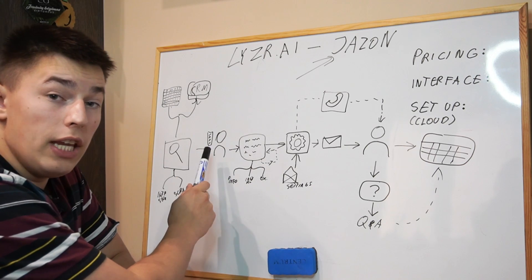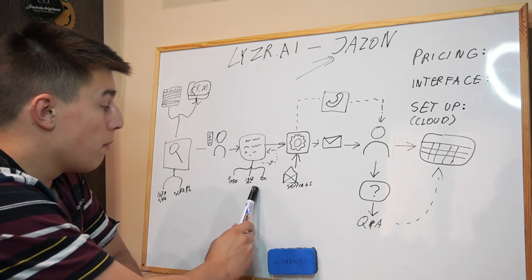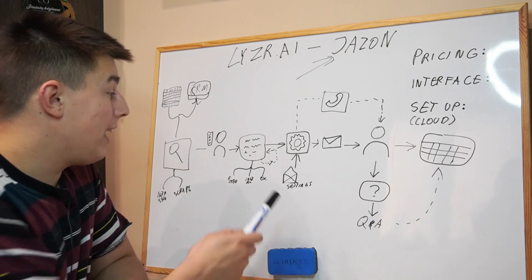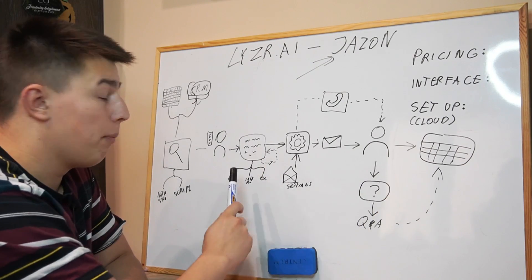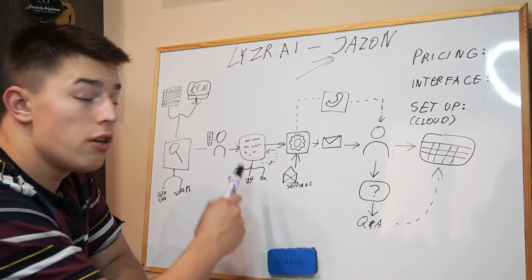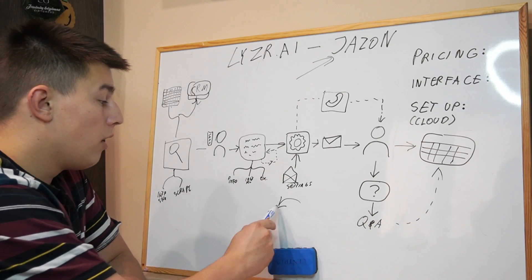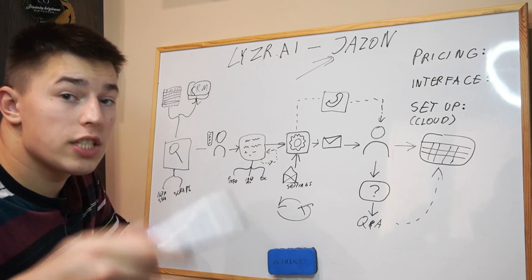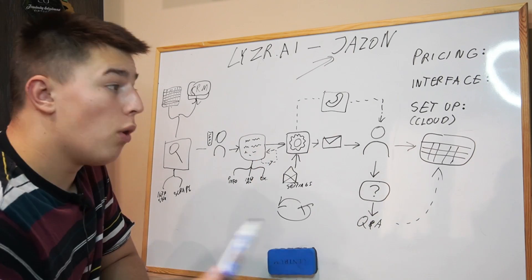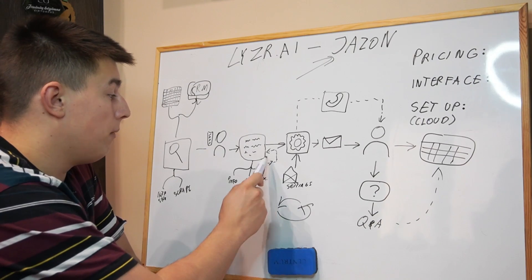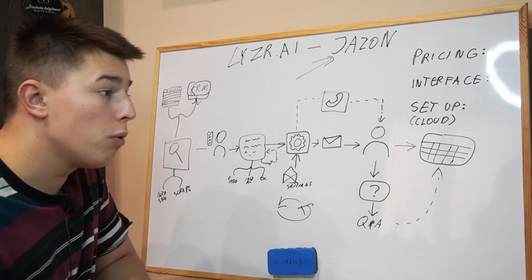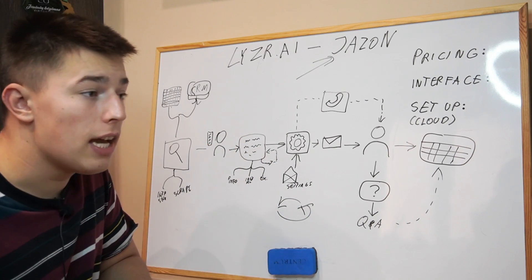Those personalized emails include a few things: the information about your lead, your product information, your custom instructions, and examples of email structures or templates that have worked very well in the past. Every time Jason gets a positive reply, books a meeting, or handles an objection, it feeds itself and learns over and over again. There's no need for A/B testing because Jason constantly iterates based on the feedback it gets itself.